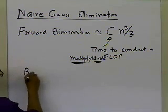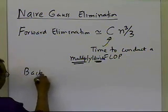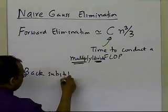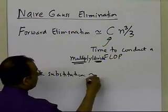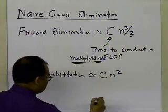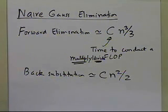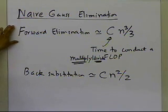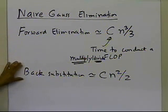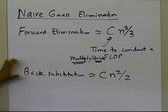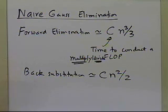In a similar spirit, back substitution takes approximately cn² divided by 2 amount of time. So for doing one set of equations, forward elimination takes cn³/3 and back substitution takes cn²/2, where c is the time to conduct a single multiply or divide floating point operation.